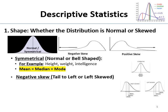Negative skew is the plot in the middle of the screen. Negative skew has a tail to the left — sometimes called left skewed. Scores on an easy midterm would be like this: most people get high scores, but there are still a few people who blow it because they didn't sleep, had a bad night, or didn't study. So even on an easy test, most people do well — that's a negatively skewed distribution. In all skewed distributions, the mean gets pulled towards the tail. So in a negatively skewed distribution, the mean will be lower than the median.